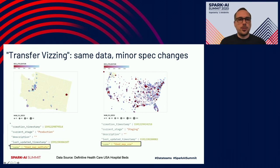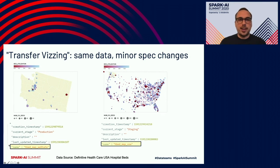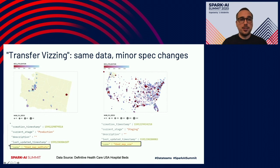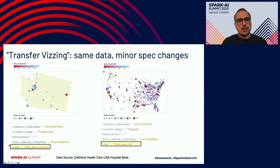That leads us to our term 'transfer viziting' — a cheeky term analogous to transfer learning, streaming the visualization-as-model analogy as much as possible. We have a visual encoding that is great for communicating the ICU bed census information — number of beds, capacity — and we've updated the spec of the visual to not just display the geographic region of Washington state, but the whole U.S.